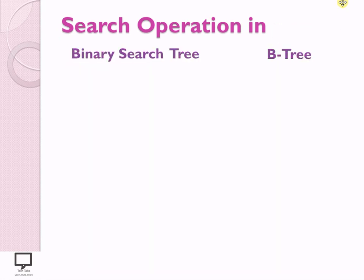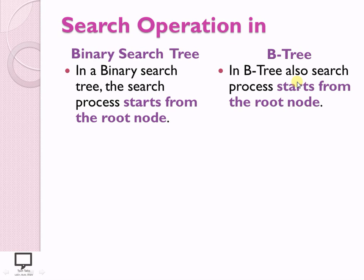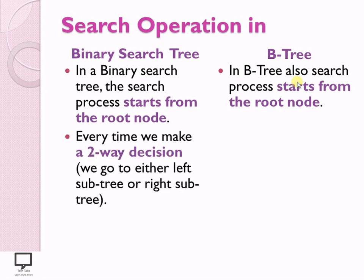Now I am going to explain the difference between binary search tree and B-Tree using different parameters. The first parameter is: both start searching from the root node. In binary search tree, I need to take a two-way decision.